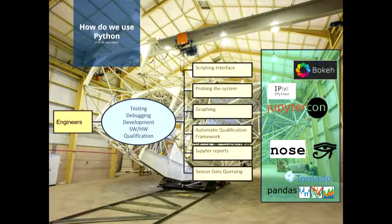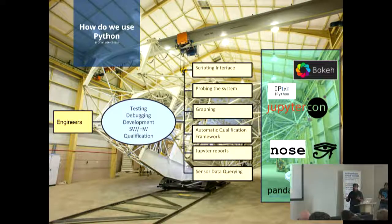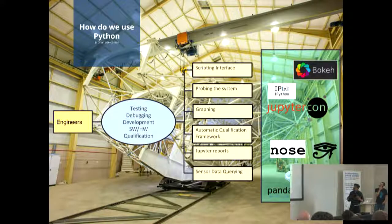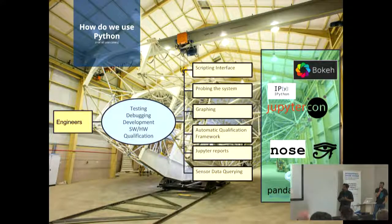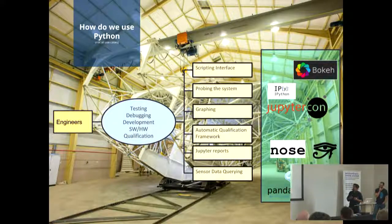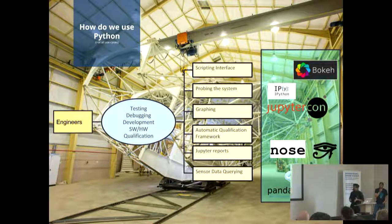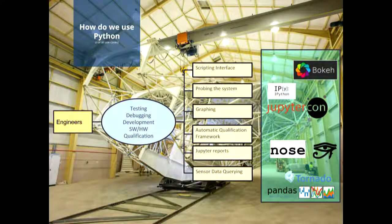For the engineering team, testing and debugging is very important when parsing out hardware devices, so they need a scripting interface. They also probe and query into the system, and need automated qualification documents. We use Tornado a lot — it's our choice for our web stack and for TCP/IP servers. We use Nose for testing, Sphinx for documentation, and we love IPython — you can control the telescope from IPython. There's also a big drive from other subsystems using the Bokeh server for easy graphing and data visualization.